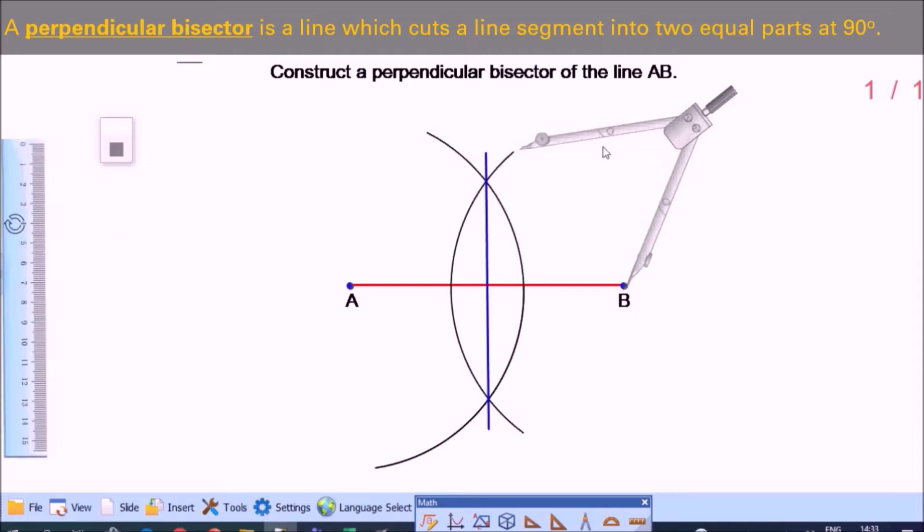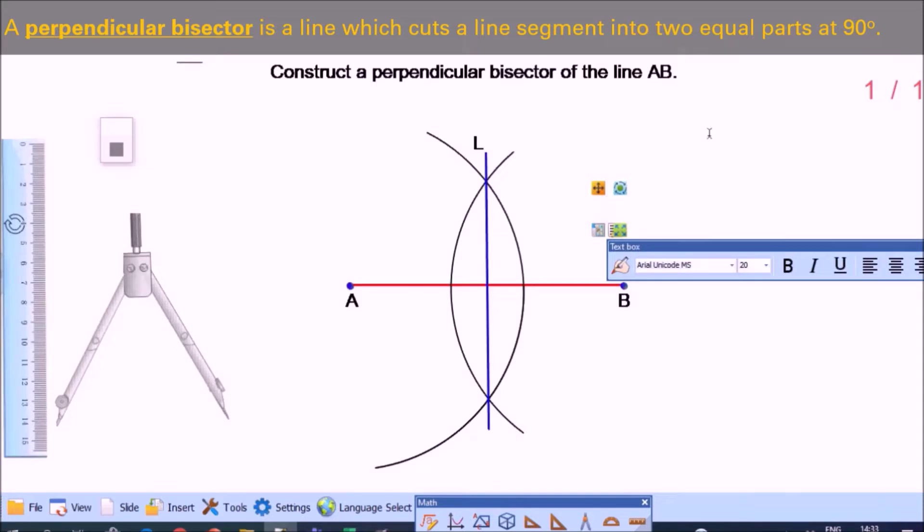And we can name it and label it, for like L or with any letter that is required. And we can also check if it is really perpendicular to AB and it cuts the line into two equal parts.